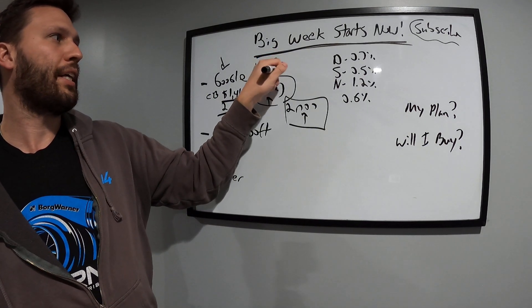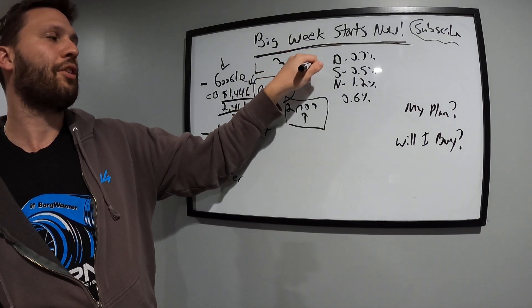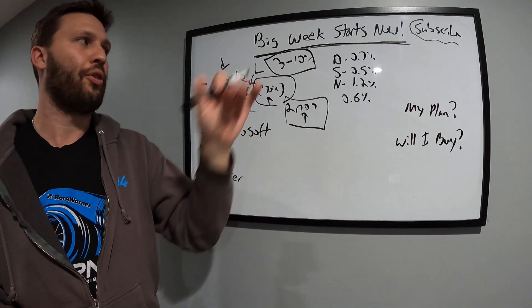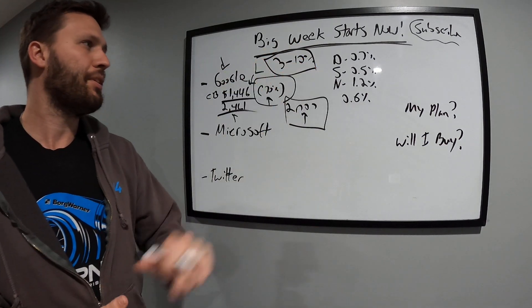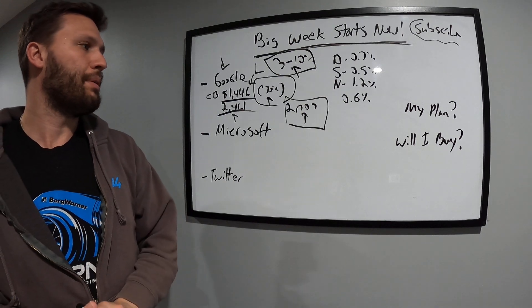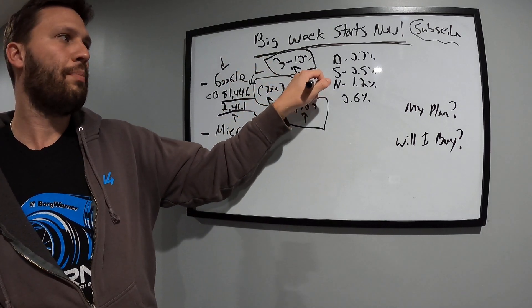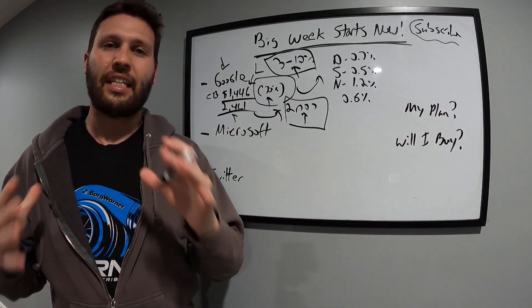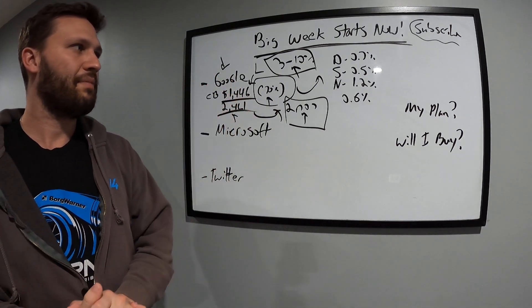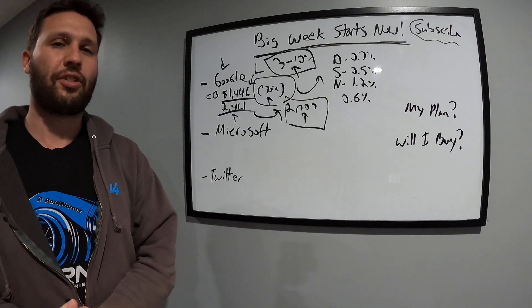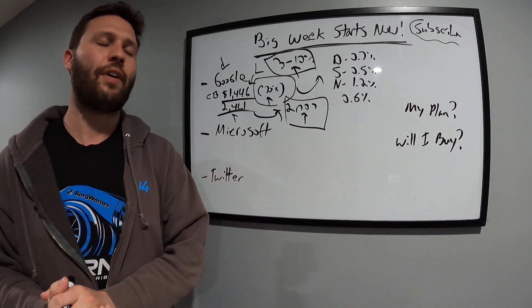If Google misses earnings tomorrow, I could see this stock pulling back anywhere from three to ten percent, and that's going to pull down the whole indexes—all of them. If that happens, I'd be more inclined to maybe buy it if it gets closer to $2,000. If it rallies up off good news or they beat or have decent earnings and stay kind of stagnant, I'm totally cool with my position.